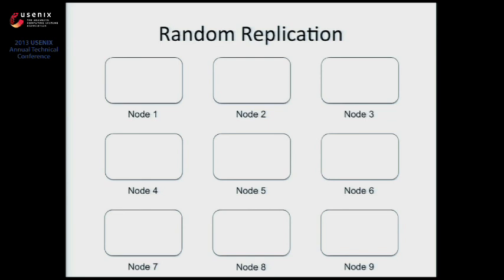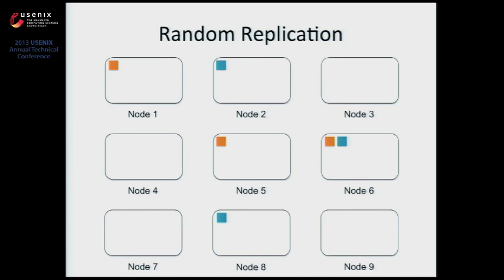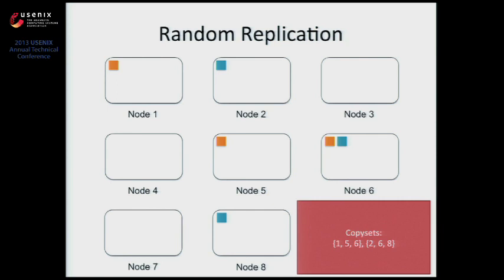Let me explain why these systems are so amenable to losing data under correlated failures. Take a cluster of nine nodes. Node number one replicates a chunk and chooses two other nodes at random — say nodes five and six. From the perspective of a single chunk, the only way we'll lose data is if nodes one, five, and six fail at the same time. I'll now introduce the key concept of our paper: copy sets. A copy set is a set of nodes that contain all copies of a chunk — nodes one, five, and six form one copy set; nodes two, six, and eight form another. A copy set represents a unit of failure: if you lose a copy set, you lose data.